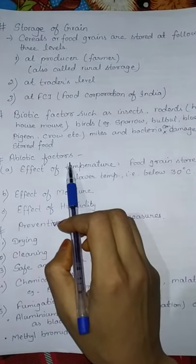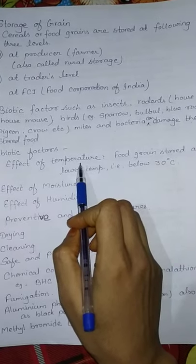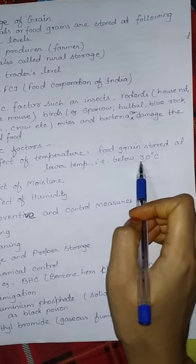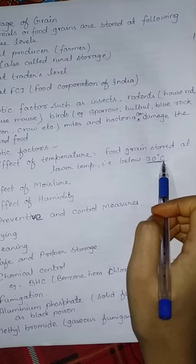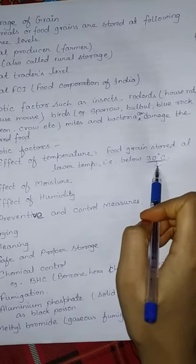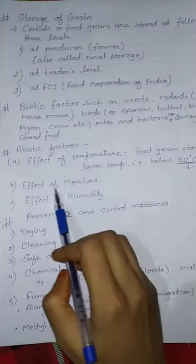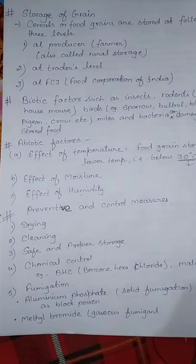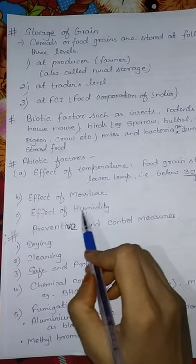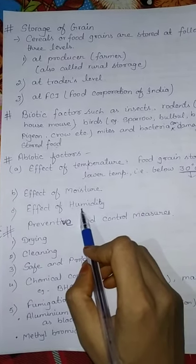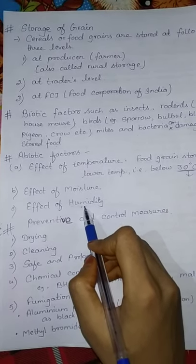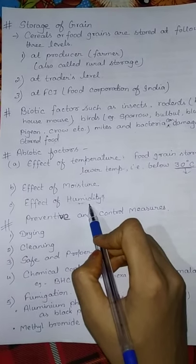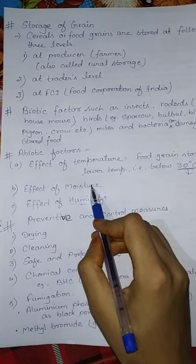Abiotic factors also affect storage. First is the effect of temperature. Food grain is stored at lower temperature, below 30 degrees Celsius. Then effect of moisture and effect of humidity. If humidity is high in the storage room, fungi and bacteria grow quickly. Bacteria and fungi find favorable conditions, which destroy the stored food or grain.